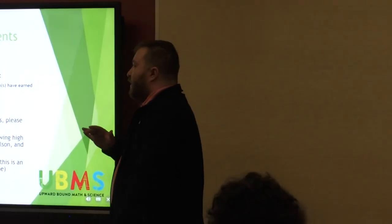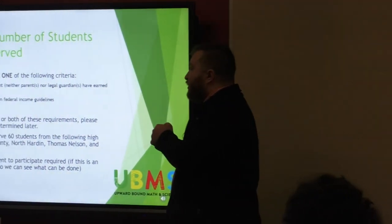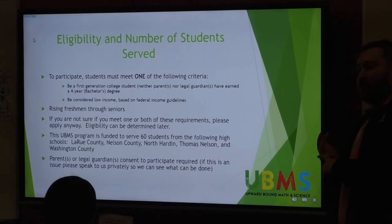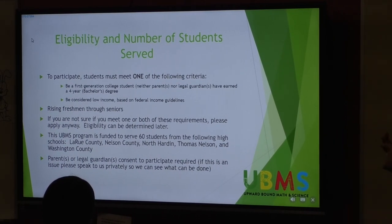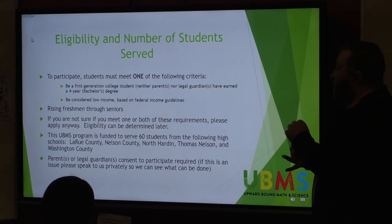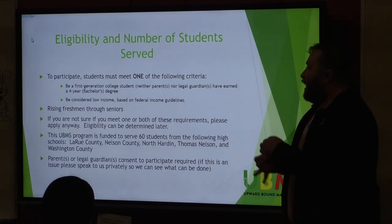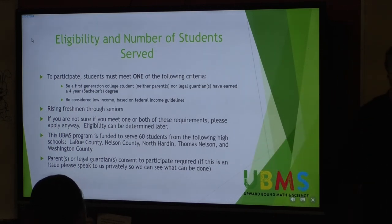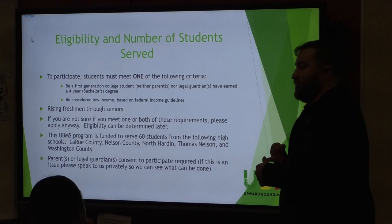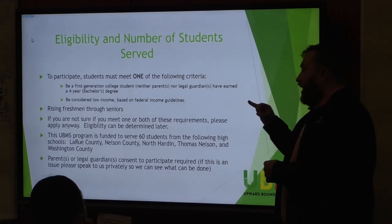Let's talk about eligibility. In order to participate, students have to meet one of the following criteria. Either be a first-generation college student, meaning neither your parents nor legal guardians have earned a four-year bachelor's degree. If they've earned a two-year degree or if they have a ton of certifications and they have every certification in the book to let them be really great but they don't have that four-year bachelor's degree, then you totally count as a first-generation college student in the eyes of the Department of Education.